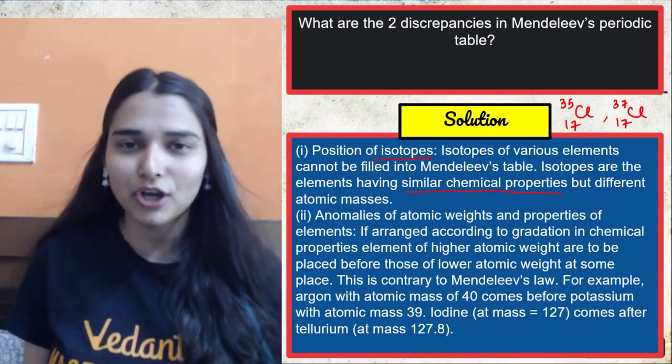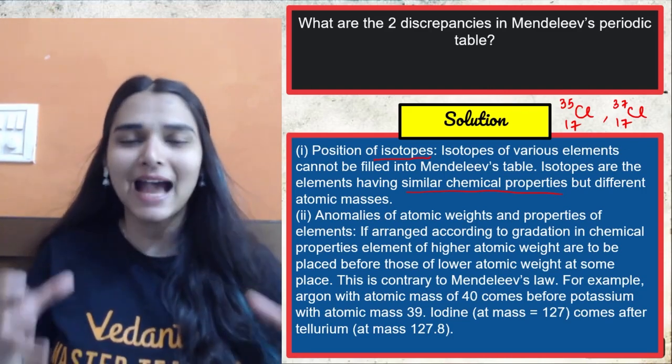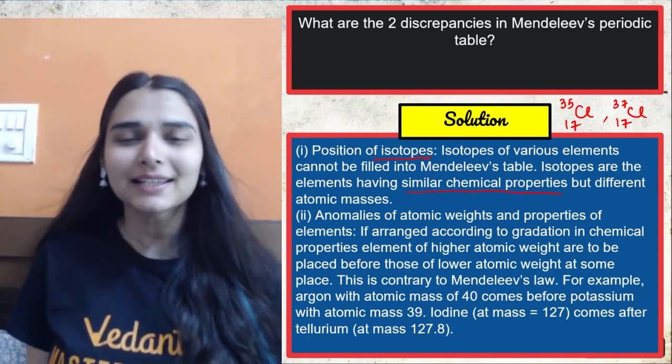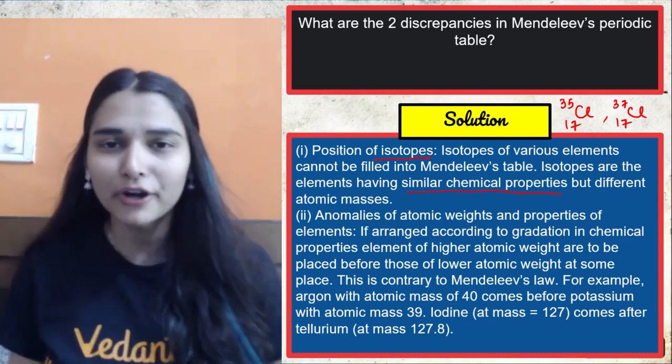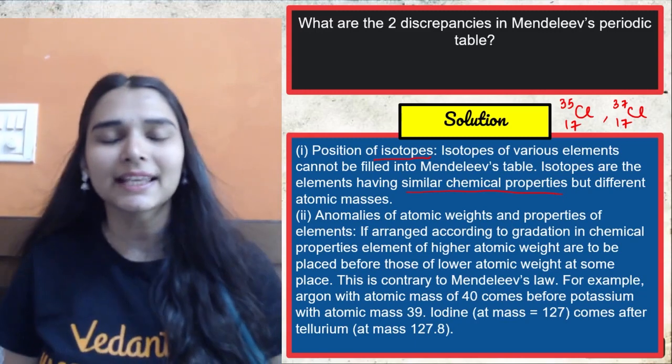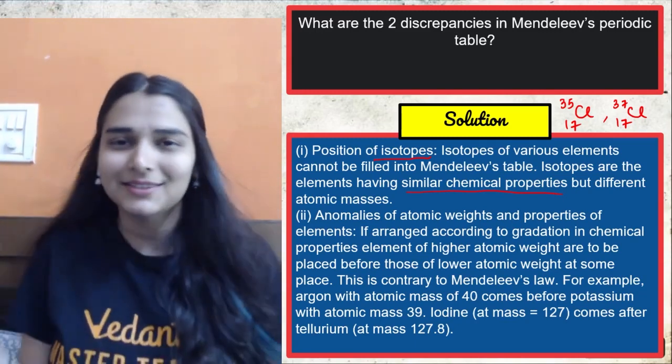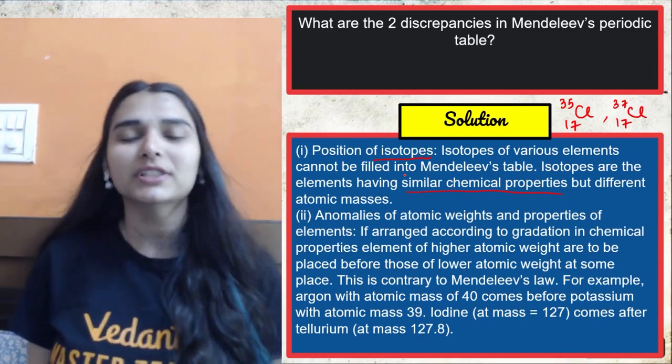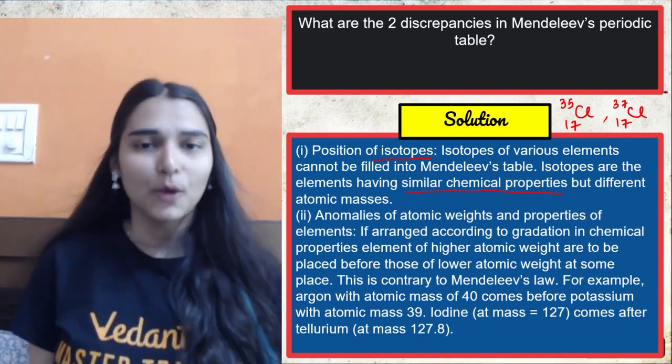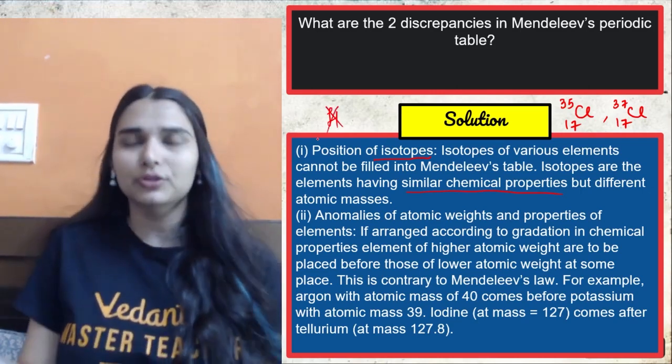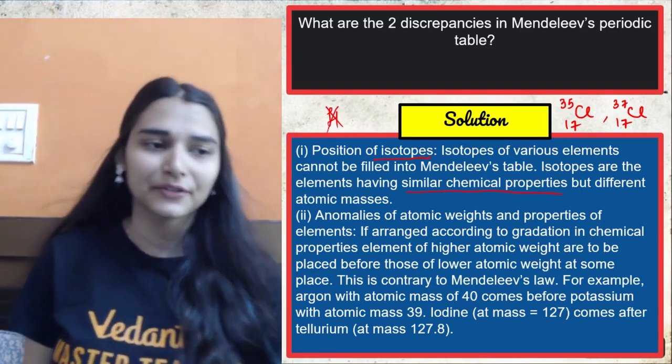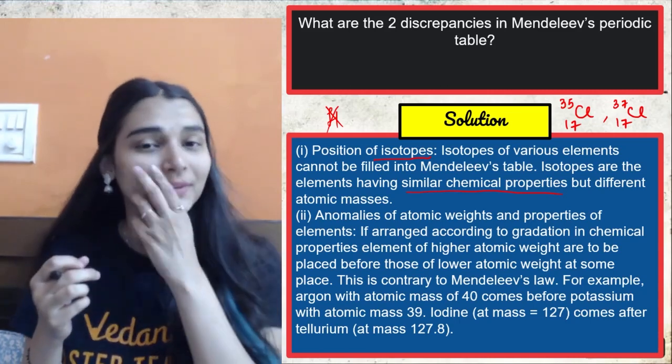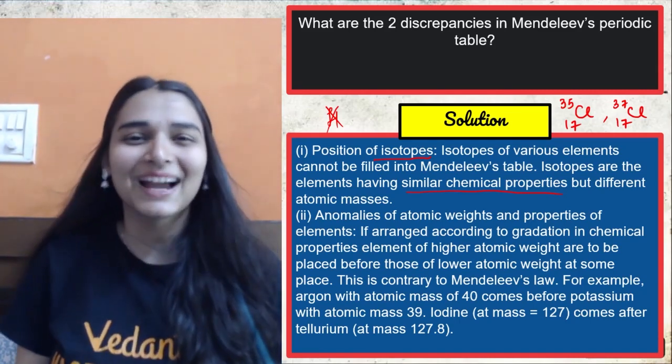Now, what are isotopes? Isotopes are the atoms of same element which have different masses. So let's say we have chlorine atoms, different kind of chlorine atoms. They all have atomic number same because they are atoms of the same element. So number of protons are same, atomic number same. But the masses are different. Some chlorine atoms having a mass of 35, some have a mass of 37. These are isotopes. They are atoms of same element with the different masses. And the thing with isotopes is that they have similar chemical properties.